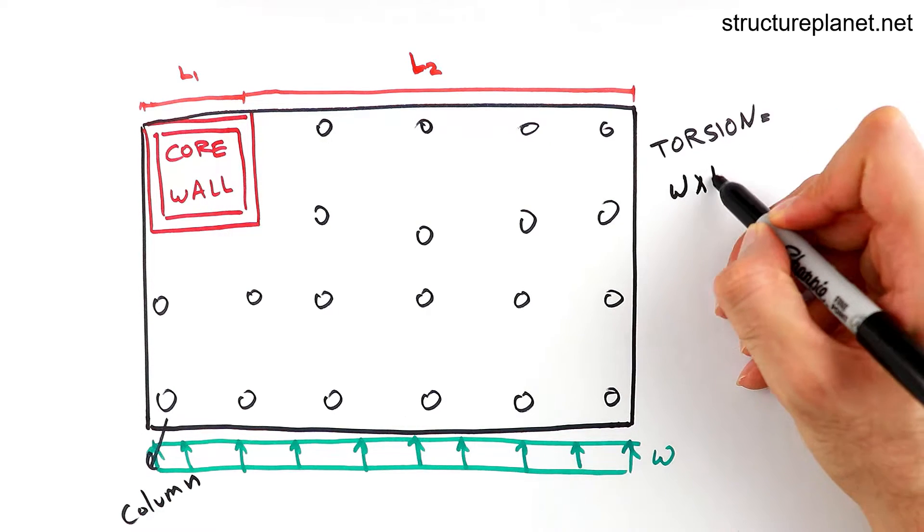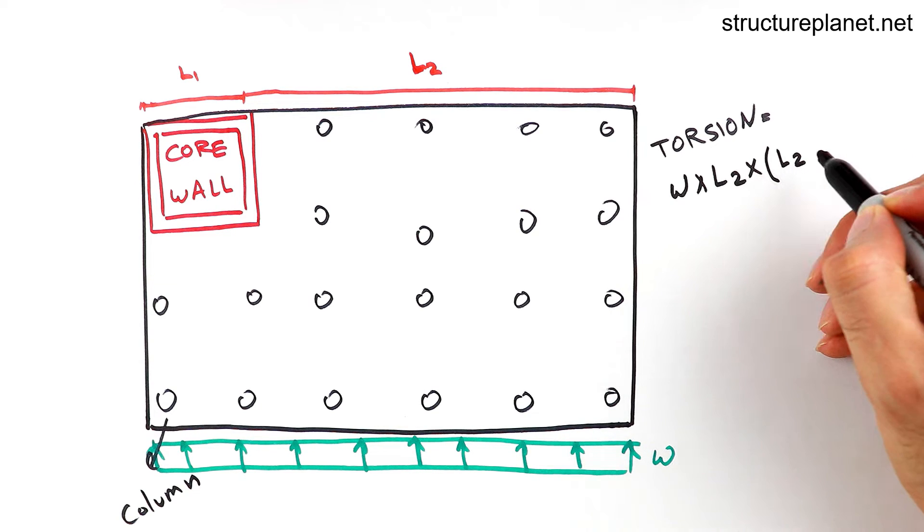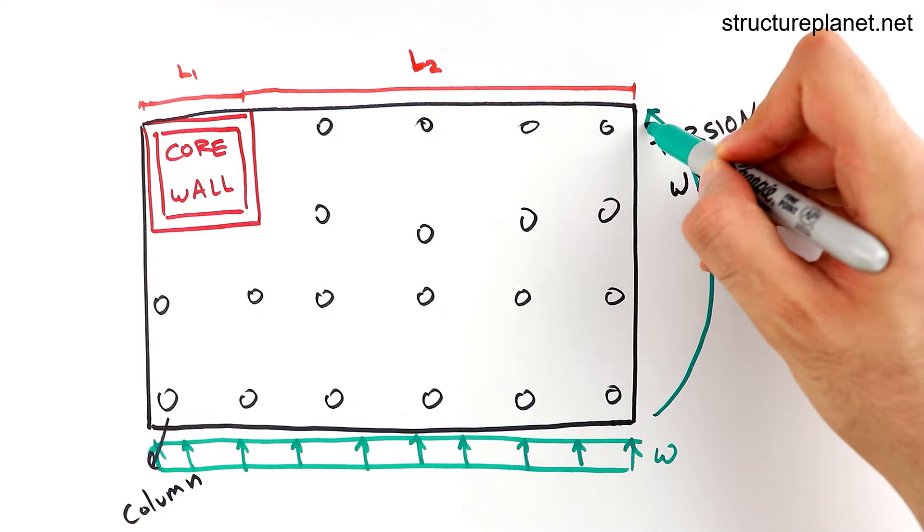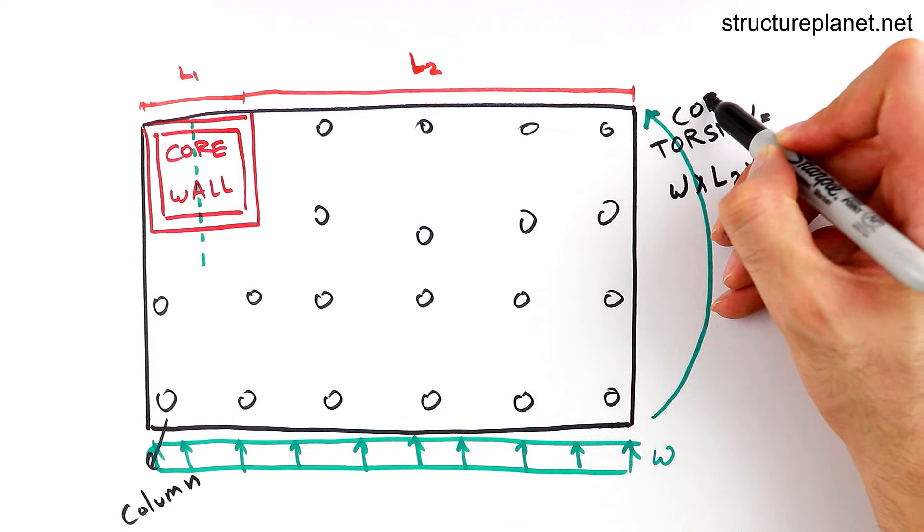However, even if the lateral system placement is perfect, since the applied lateral loads come from various directions with varying magnitude, there will still be some degrees of torsional effects.